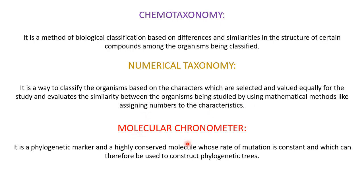Then comes the molecular chronometer. It is a phylogenetic marker and a highly conserved molecule — it can be a gene, a protein, or 16S rRNA, which is a molecular chronometer. It is a highly conserved molecule whose rate of mutation is constant and which can therefore be used to construct phylogenetic trees. Thus in cases of evolutionary relatedness, you can use molecular chronometers to construct phylogenetic trees.